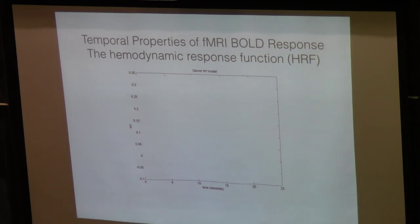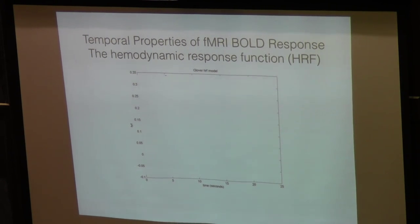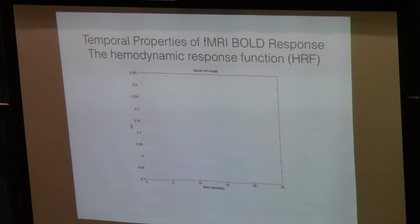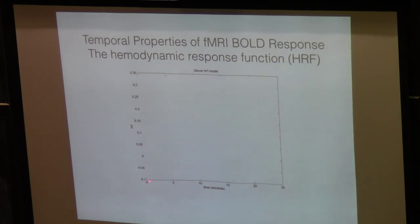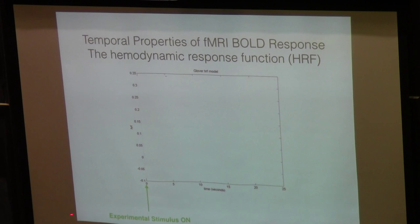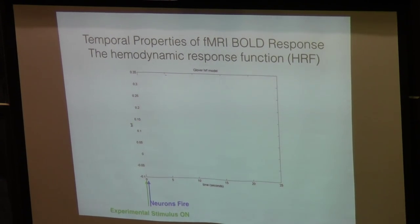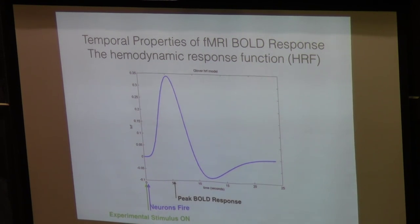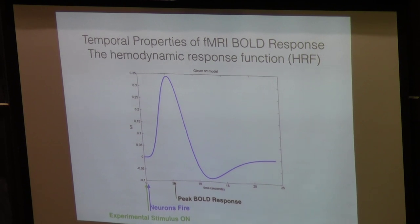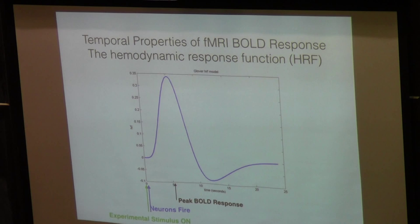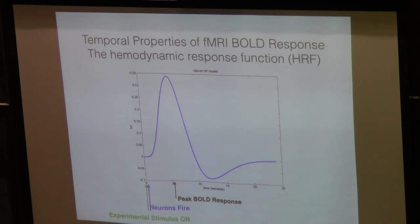To give you an idea of the temporal properties of the BOLD signal — the blood oxygen level dependent signal — this shows the hemodynamic response function. Time is on the x-axis and activity of the hemodynamic response is on the y-axis. You might see an experimental stimulus, and right after seeing it neurons fire on the order of milliseconds. But the hemodynamic response actually peaks around 5 to 6 seconds — it's really slow. There's a huge lag between the peak response and when the stimulus occurs, and a lot of processing goes into lining up the peak of your BOLD response with stimulus onset.